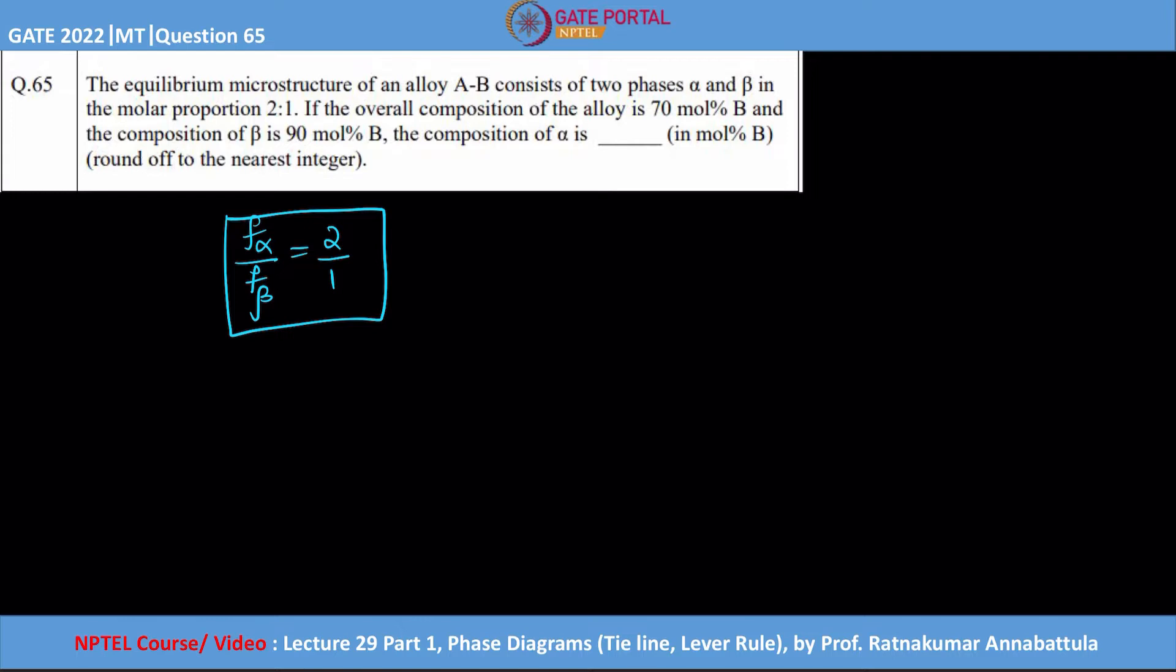This is a standard question based on the lever rule. What they are telling is, let us just take a tie line between alpha and beta at a given particular temperature. Because we are looking at the microstructure, let us assume that it is at room temperature.